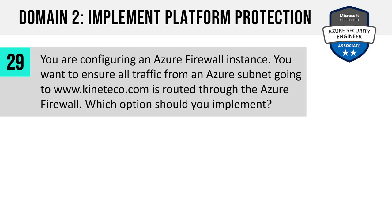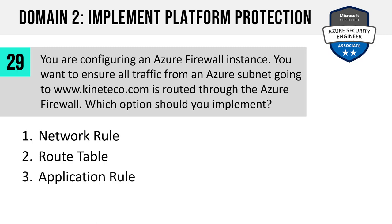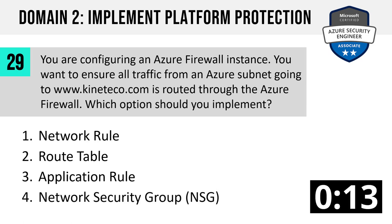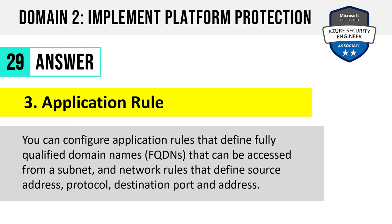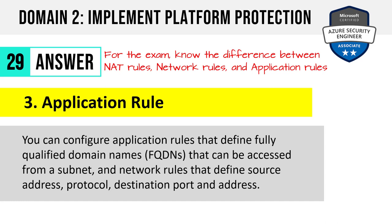Number 29. You're configuring an Azure Firewall instance. You want to ensure all traffic from an Azure subnet going to www.kinetico.com is routed through the Azure Firewall. Which option should you implement? A network rule, route table, application rule, or network security group? The answer is three: an application rule. You can configure application rules that define fully qualified domain names that can be accessed from a subnet, and network rules that define source address, protocol, destination, port and address. For the exam, know the difference between NAT rules, network rules, and application rules in Azure Firewall.